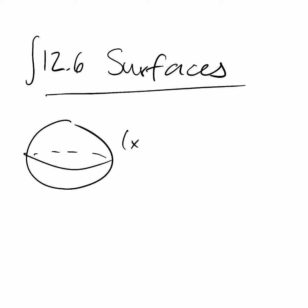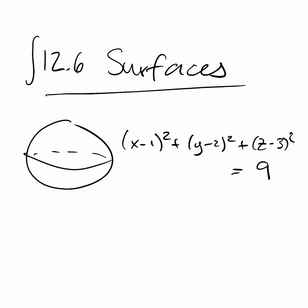So maybe this sphere is x minus 1 squared plus y minus 2 squared plus z minus 3 squared all equals 9. So that's a sphere centered at 1, 2, 3 of radius 3. And remember it's the surface of the sphere not the insides. This isn't a solid ball.